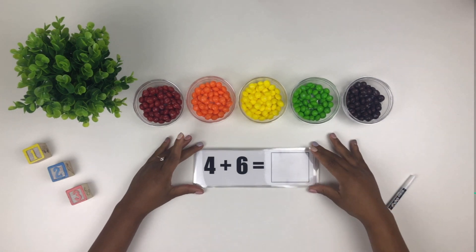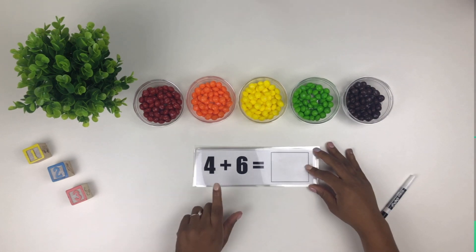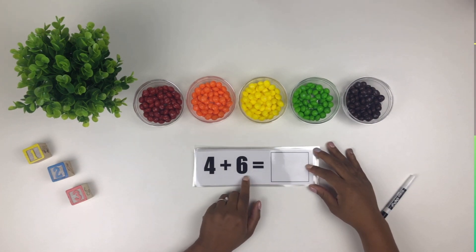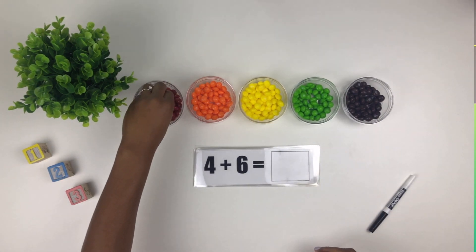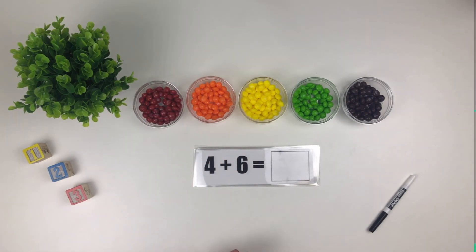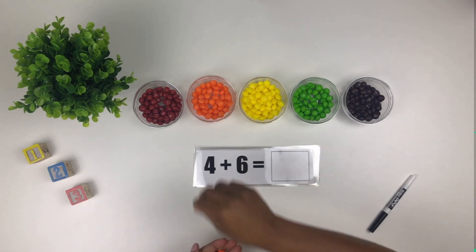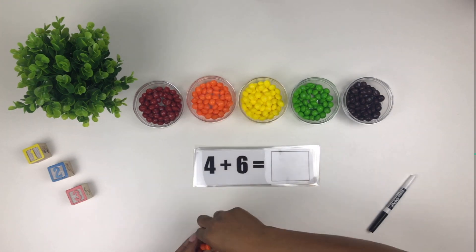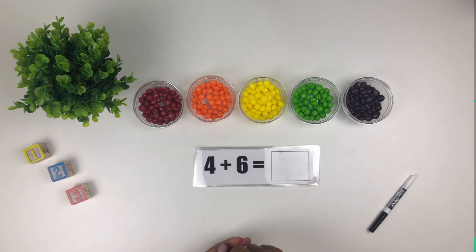Our first math problem, four plus six. So we're going to take four red Skittles and six orange Skittles. Now we count.